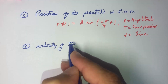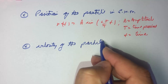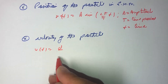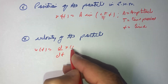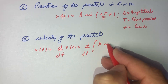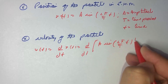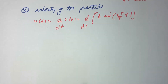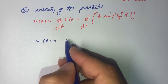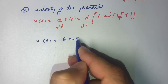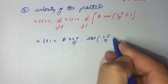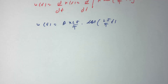From this we are going to find out the velocity by differentiating. The velocity of the particle v(t) is given as d/dt of x(t), and differentiating A·sin(2πt/T) we get v(t) equals A·(2π/T)·cos(2πt/T). So we have the equation for the velocity.